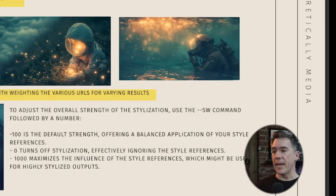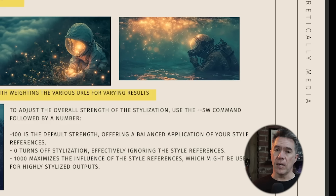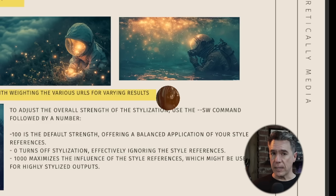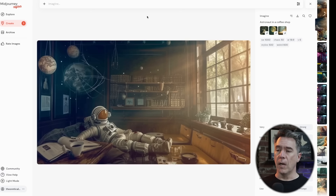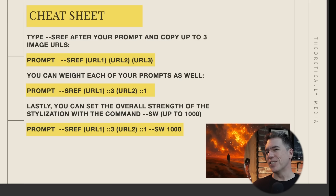As an additional command, you can increase the overall strength of your style reference images by issuing --SW, which defaults at 100 and goes all the way up to 1000. Returning to our astronaut in the coffee shop and giving him a maximum of SW 1000 gives us images that aren't necessarily great, but definitely lean more into our style references. Overall, I think this is a pretty cool new feature that will become pretty powerful when combined with other --dash commands, or even maybe permutations. Once again, the free PDF is over on Gumroad.